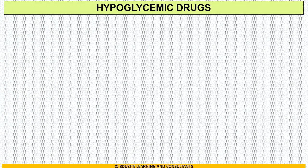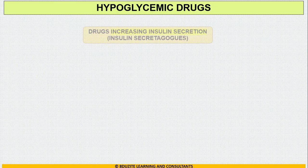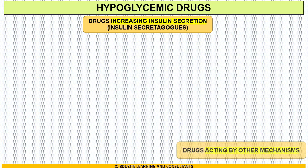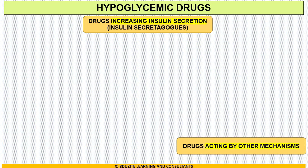Classification of hypoglycemic drugs. There are two categories: drugs that increase insulin secretion, which are also called insulin secretagogues, and drugs that act by other mechanisms.